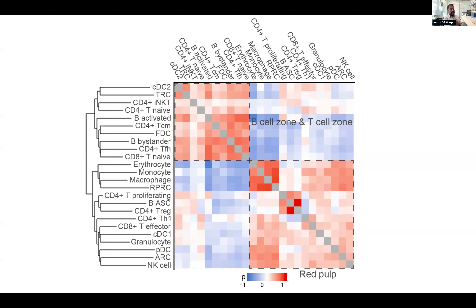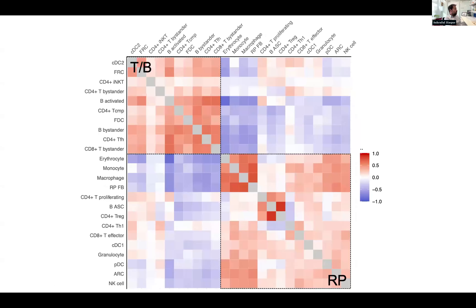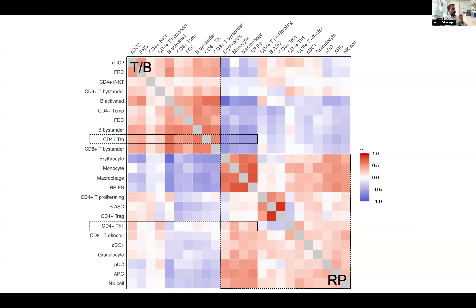We used this to test our original hypothesis: that CD4 T cells turning into TH1 cells were close to monocytes. That hypothesis was based on engineered T cells — this is polyclonal endogenous CD4 T cells and monocytes. Looking at TH1 cells, one of the most red correlations is indeed with monocytes, which is very different from the counterpart CD4 T cell type, which is not correlated with monocytes at all.